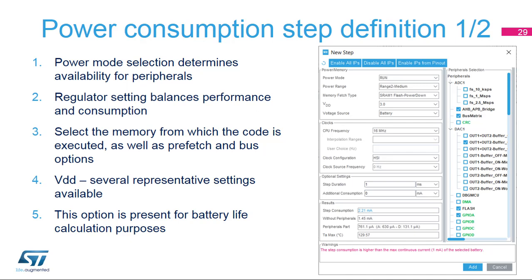A power step can be added or edited in this dialog window. If the Transition Checker is enabled, it will preset the new step with allowed values. The power step is determined by several characteristics, with the power mode being the most important. The availability and characteristics of each power mode are described in a specific reference manual or datasheet. Power mode selection has the most significant impact on the availability of other settings, interfaces, and power performance balance. The voltage regulator sets the core voltage. At lower voltages, the system clock frequency is limited, but the power consumption is often drastically reduced.